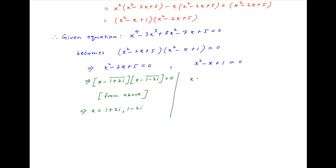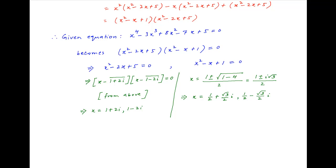In the second case, solving the quadratic x squared minus x plus 1 equals 0, we get x equals 1 plus or minus the square root of 1 minus 4, all over 2, which equals 1 plus or minus i times root 3, all over 2. Therefore, x equals one-half plus root 3 over 2 times i, or x equals one-half minus root 3 over 2 times i.